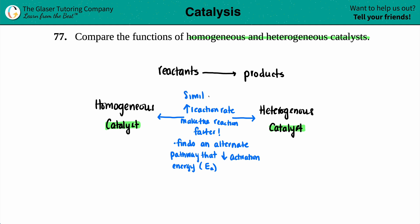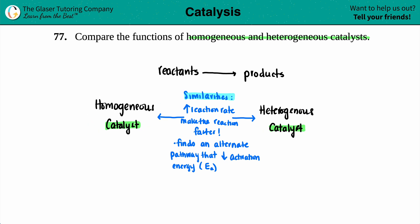Now let's talk about the differences between homogeneous and heterogeneous catalysts. By definition, you should have seen these words before from the beginning of class when you talked about homogeneous and heterogeneous mixtures. Homogeneous means one — it's the same species.